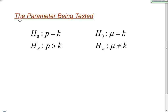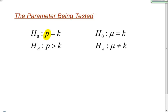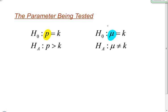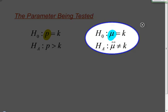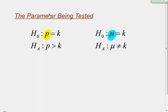Now let's look at the parameter being tested. As I mentioned, you could use P for population proportion or mu for population mean. On the right-hand side here is an example of what a null and alternative hypotheses would look like for a mean instead of a proportion — I just wanted to show that comparison.